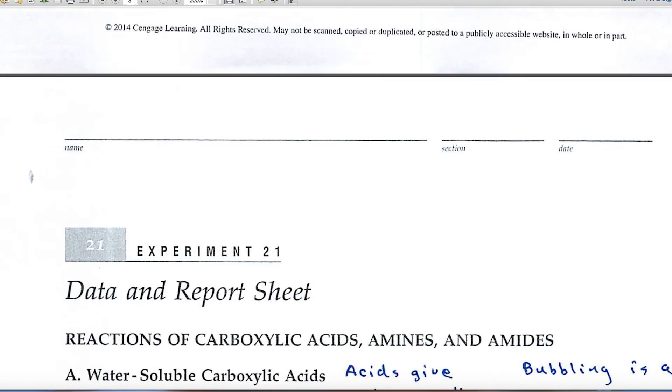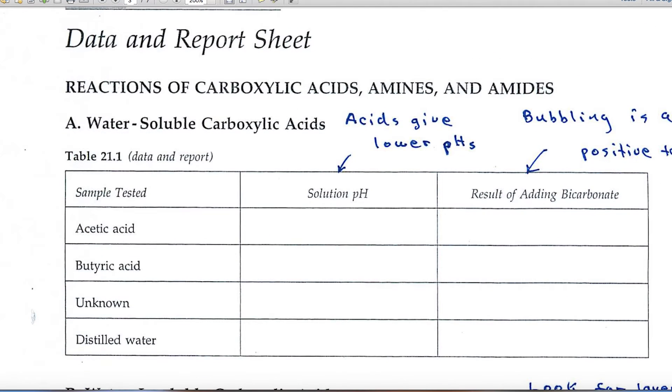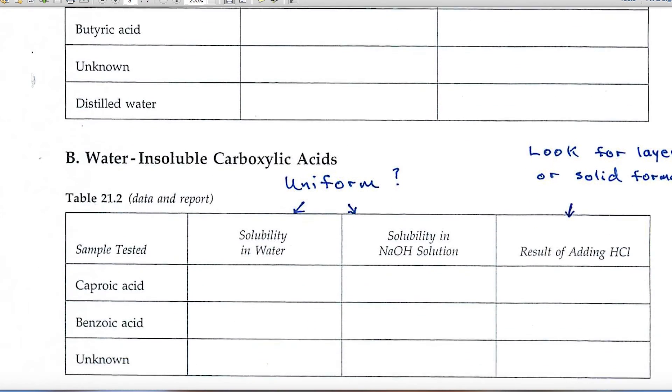Let's go to the data and report pages. Here in Part A, you're looking at the water-soluble carboxylic acids, and you'll be recording your data here. It asks for the solution pH. Acids, as you know, give lower pH values, that is lower than distilled water. And acids also react with bicarbonate to give off carbon dioxide. So what you'll look for here is a bubbling or an evolution of gas. That would be a positive test for a carboxylic acid.